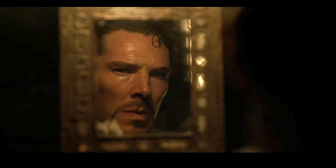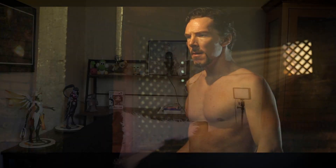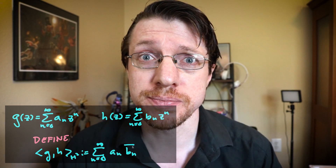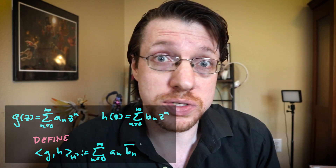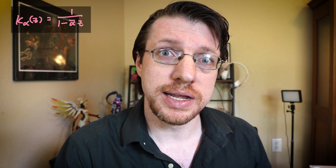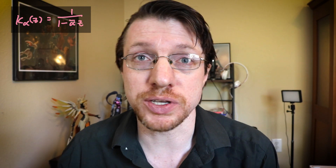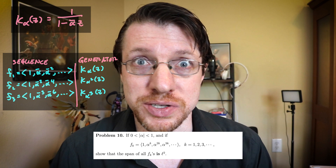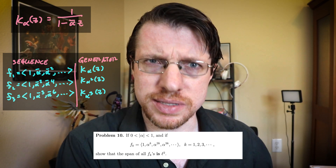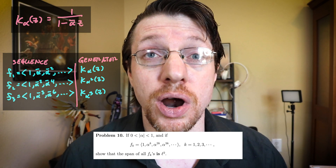Up to this point we haven't done anything new with the function space that we couldn't already do with l2 sequences - we're using exactly the same inner product from little l2 on the Hardy space. So we're looking for the reason why we're doing this generating function approach. We're going to look at the functions corresponding to these powers of alpha-bar. The first sequence is 1, alpha-bar, alpha-bar squared, alpha-bar cubed, etc. The next is 1, alpha-bar squared, alpha-bar to the fourth, alpha-bar to the sixth, etc. - and we put each of these into different functions inside our Hardy space.